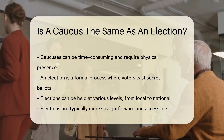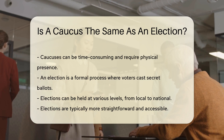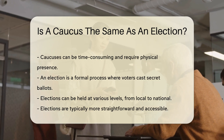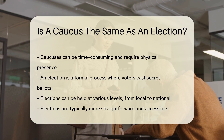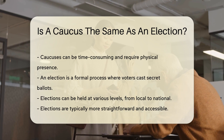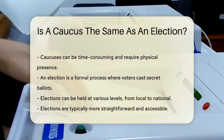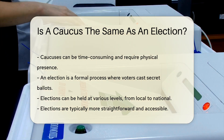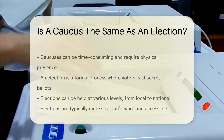An election, on the other hand, is a formal process where voters cast secret ballots. Elections can be held at various levels, from local to national. They are typically more straightforward and accessible. Voters can participate by going to polling stations or using mail-in ballots.